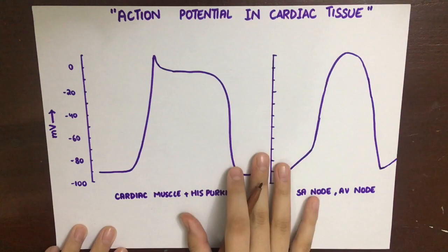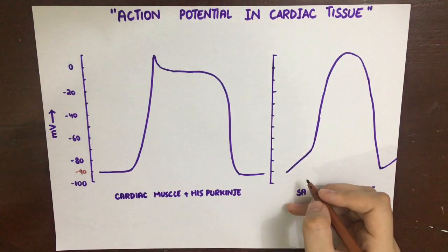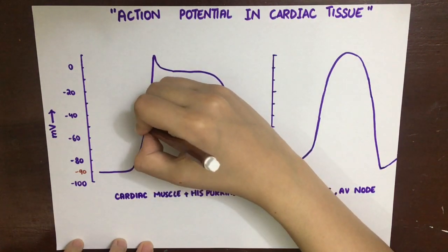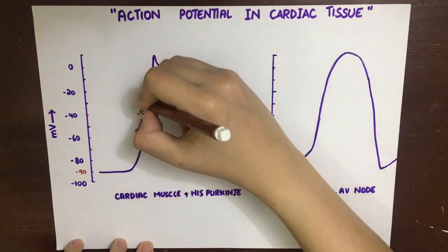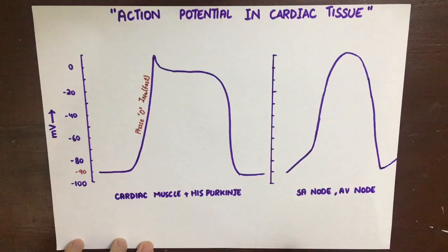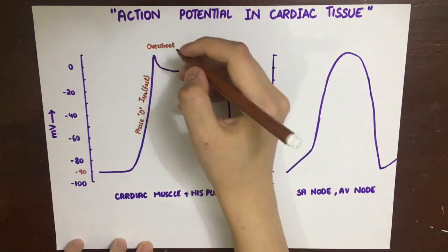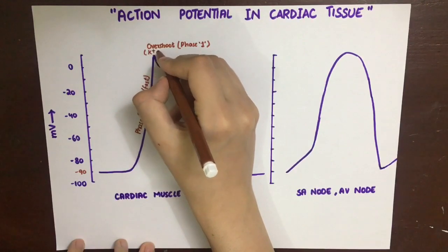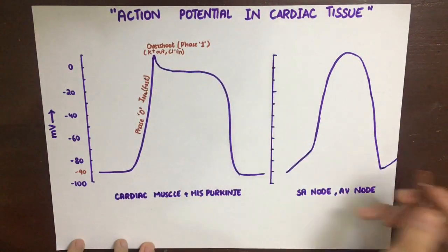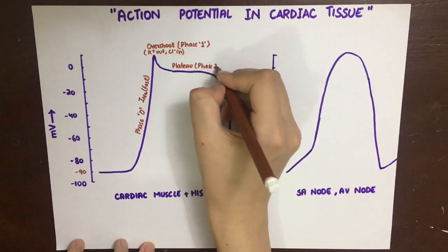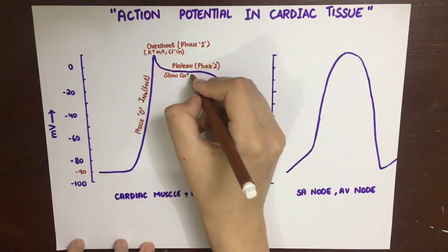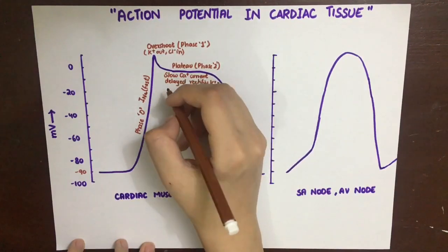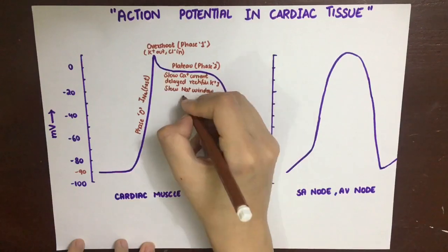The resting membrane potential of a cardiac muscle cell is minus 90 millivolts. When an exogenous stimulatory signal stimulates this cardiac muscle, it causes phase 0 depolarization due to the fast sodium current — that is, the opening of fast sodium channels which rapidly depolarizes the cell. After phase 0, we have a slight overshoot called phase 1, which is due to potassium going out of the cell and chloride going inside. After phase 1, we have the plateau phase or phase 2, which is due to slow calcium channels opening, causing calcium ions to go inside the cell, along with the beginning of the delayed rectifier potassium current, forming a plateau.